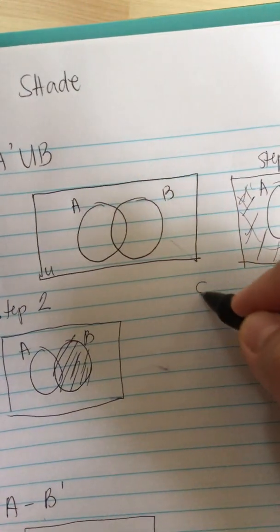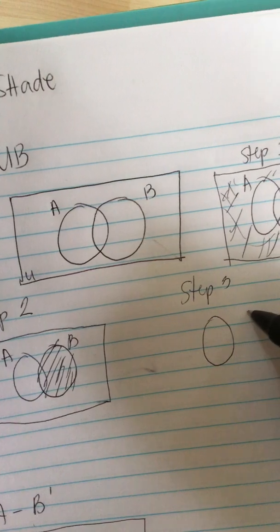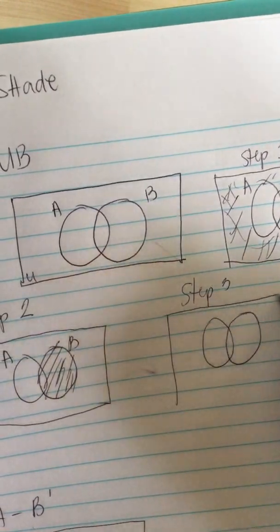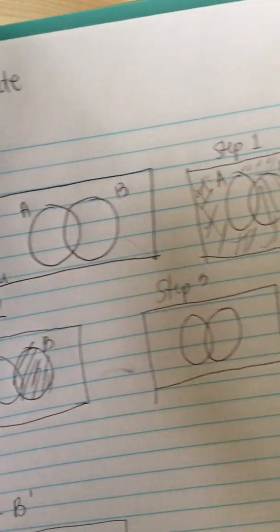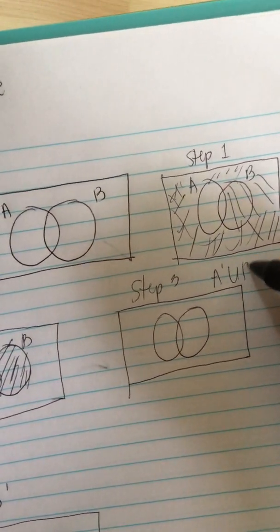And then finally step three. This is step three, we shade A prime union B.